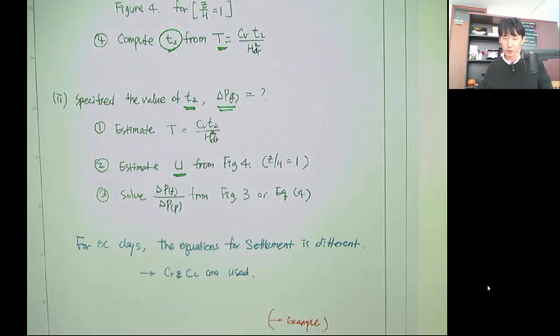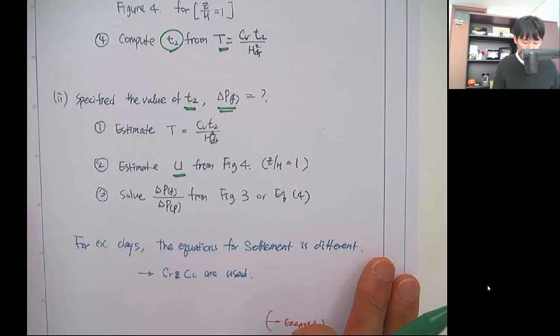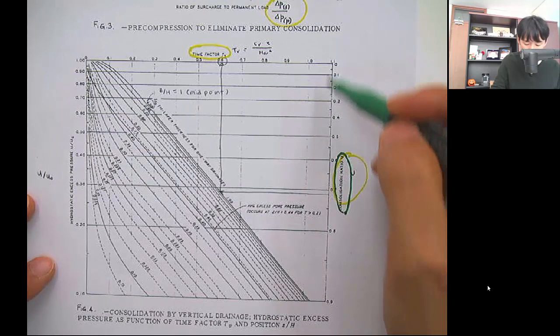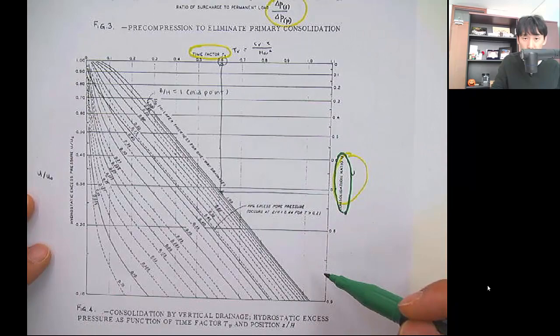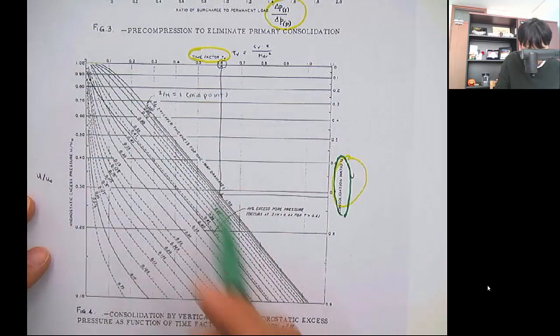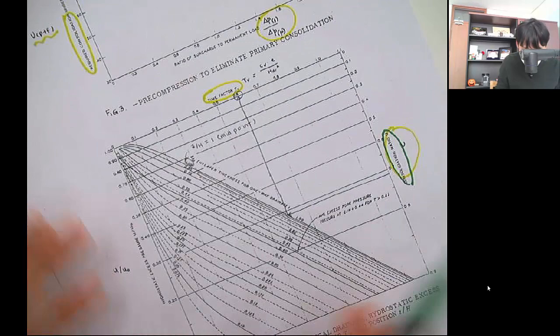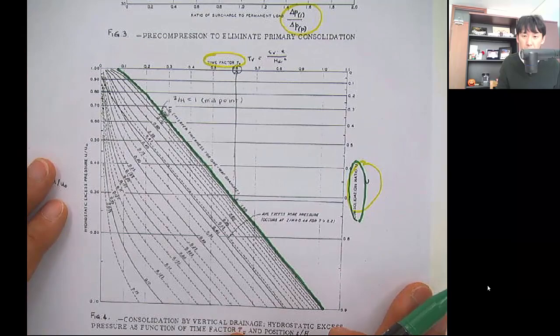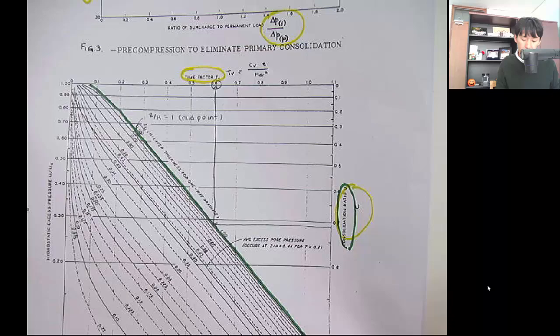Figure 4 shows the consolidation ratio on the y-axis in logarithmic scale and the time factor T_v on the x-axis. Several curves are shown for different depth factors. The outermost curve corresponds to depth factor = 1, which is the center for a double-drain system.